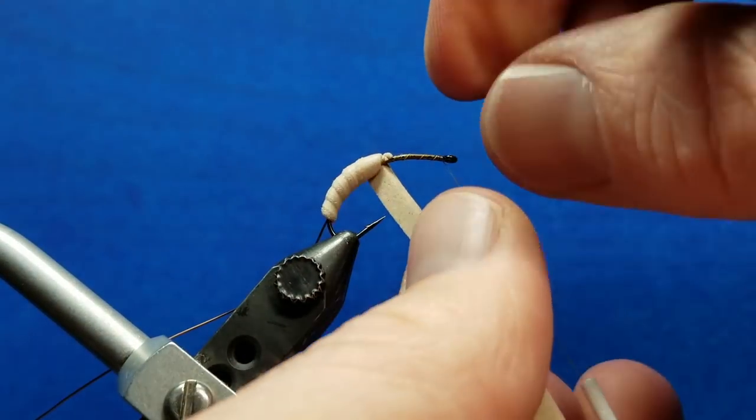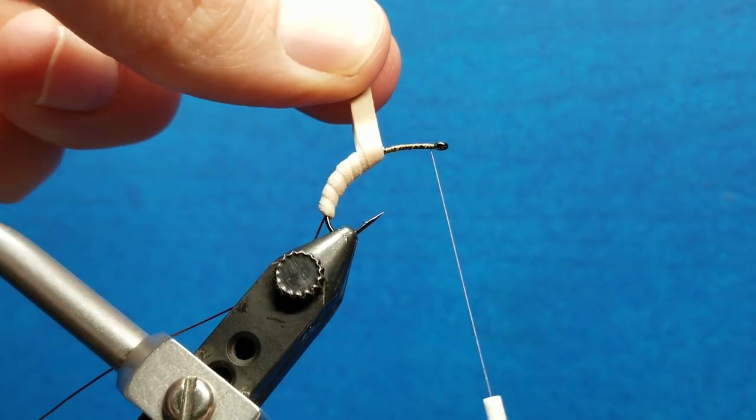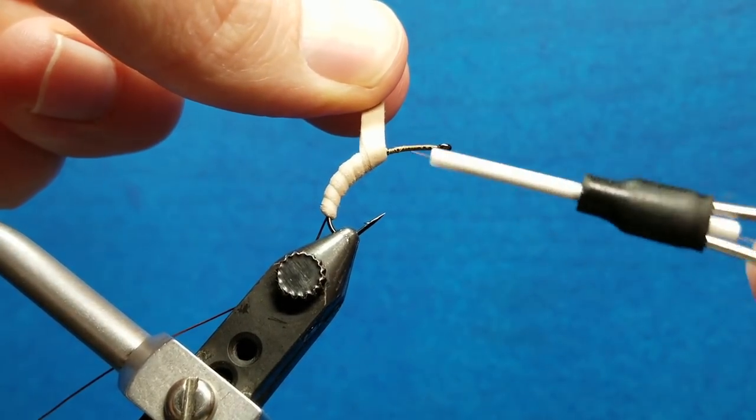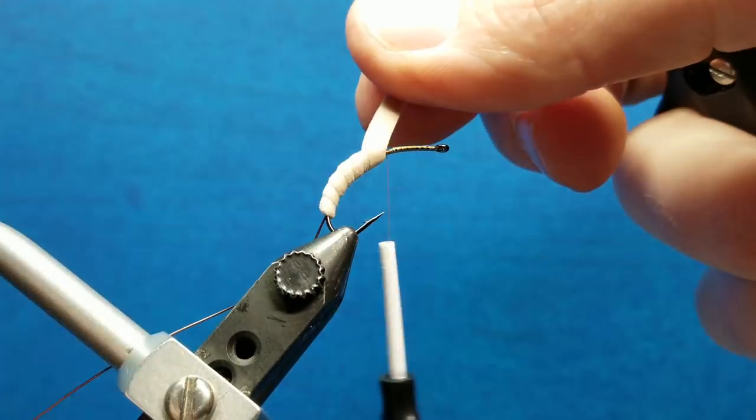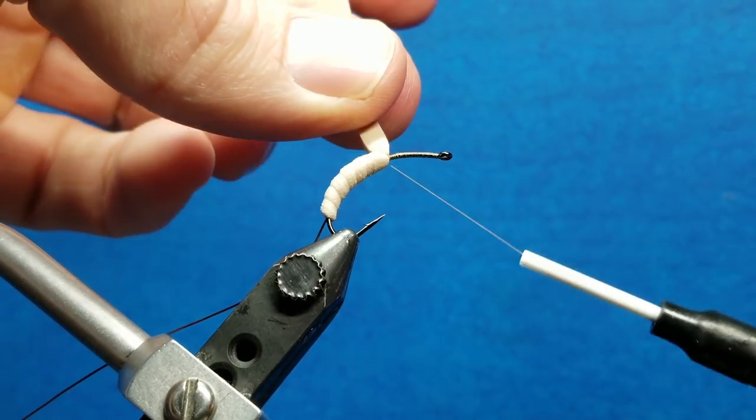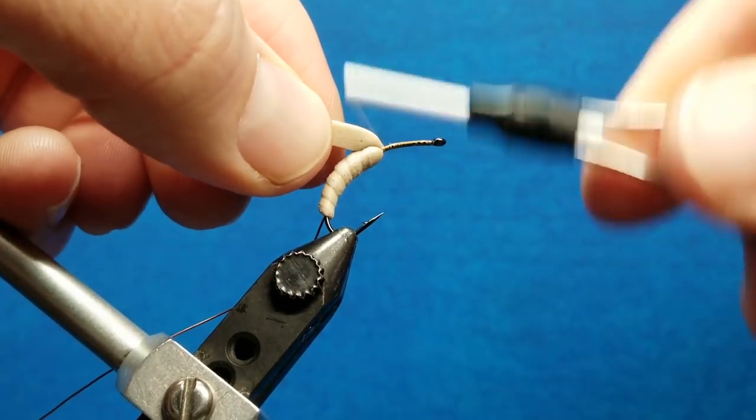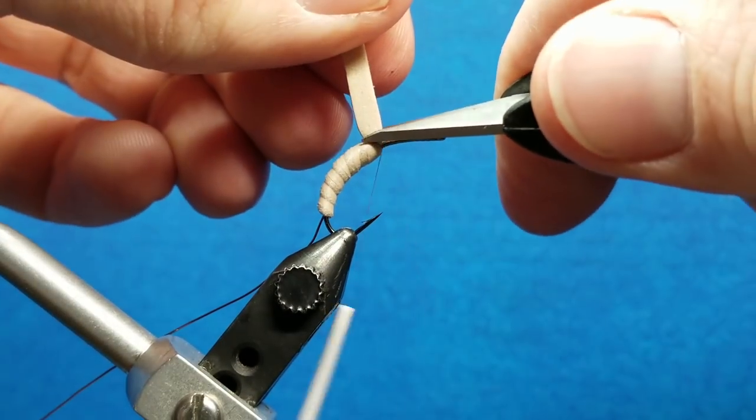So keep that pressure on. And then once I'm about at that point directly above the hook point, bring my thread over the top. Squish that down. Always give it a pinch and a cinch. A few wraps. Snip off the excess. Stick the nose of the bobbin in there and catch that so it doesn't run away on you.